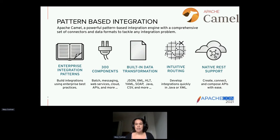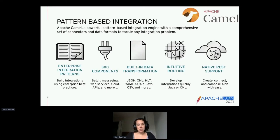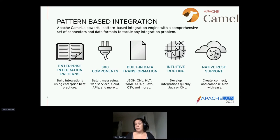There are over 300 components now built into Camel for integrating with various different systems — running batch jobs, messaging, web services, cloud integration, and more. There's also built-in data transformation, so if you're using JSON or XML, or if you're in healthcare using something like HL7, you can do all of that. When it comes to Camel, we write things called routes, and you can write those in Java or XML depending on your team's experience. There's also native REST support out of the box for creating and calling REST APIs.